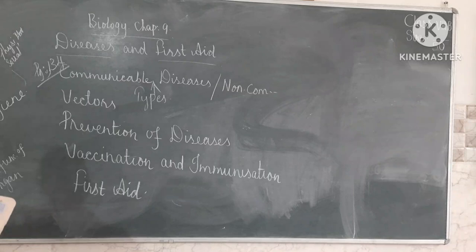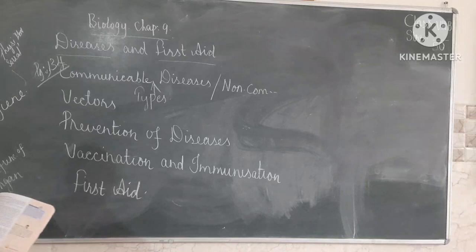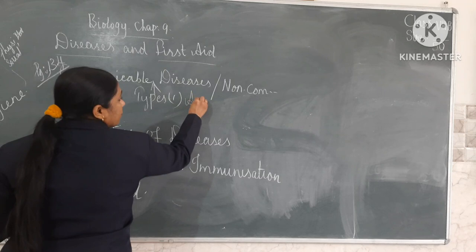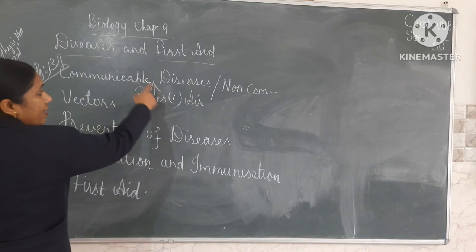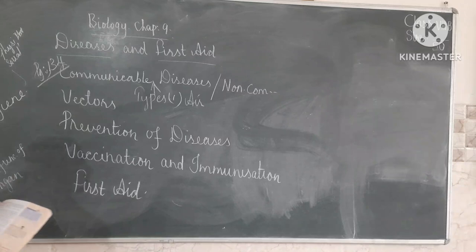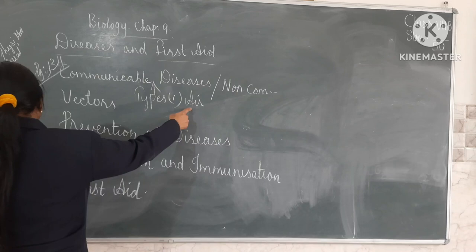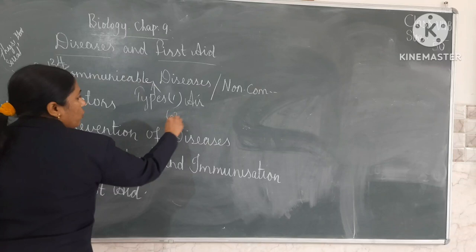Depending on how a disease is spreading, communicable diseases are of many types. The first type is airborne diseases — communicable diseases that spread through the air. Examples include influenza, measles, and tuberculosis. These diseases spread through the air, so we call them airborne diseases.